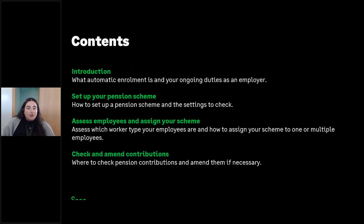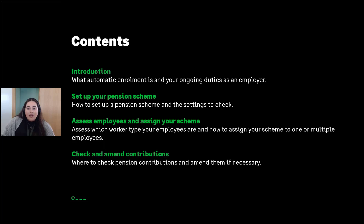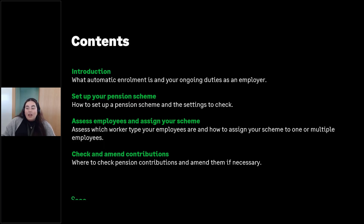A look at what we're going to cover today: I'll start with an introduction to what automatic enrollment is and your ongoing duties as an employer. We'll then look at how to set up your pension scheme and the various settings you need to check, how to assess your employees and assign the scheme to them, including the different worker types, and lastly how to check that contributions are calculating correctly and how to amend them if needed.